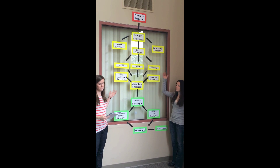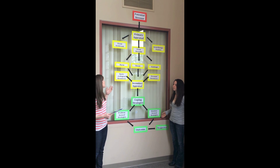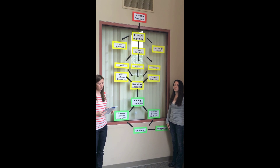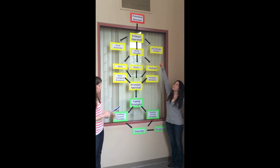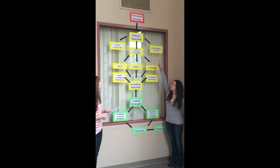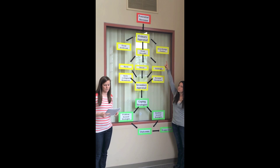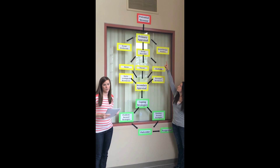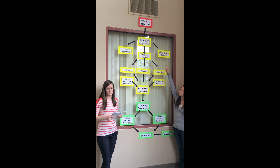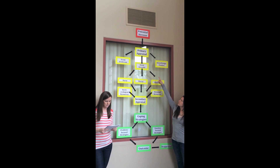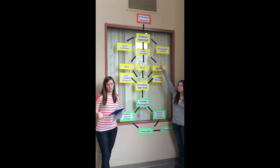Lazarus and Folkman developed the process model of coping as a framework to explain the cognitive process that an individual goes through when facing a potential stressor. The first step of the process is the potential stressor, and they defined this as any environmental stimulus that causes any unpleasant feelings in an individual. When faced with a potential stressor, an individual begins with the process of primary appraisal, which is where they determine if the stressor has potential harm to their well-being.